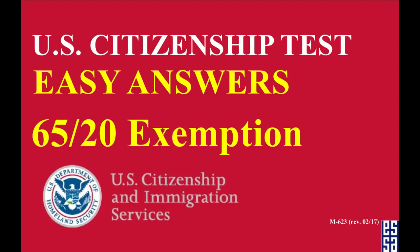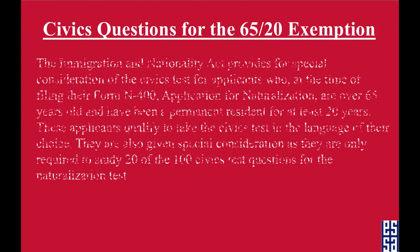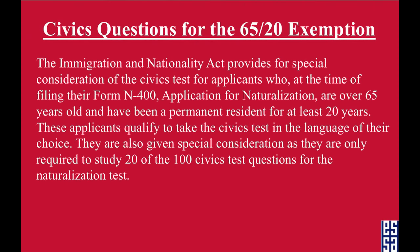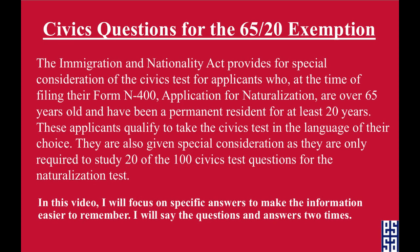Hello my friends! Today we have another video for the U.S. citizenship test using simple easy-to-remember answers, but this time it's all for the 65/20 exemption. The civics questions for the 65/20 exemption are for those applicants who are over 65 years old and have been a permanent resident for at least 20 years. These applicants can take the civics test in the language of their choice and are only required to study 20 of the 100 test questions. In this video I will focus on specific answers to make the information easier to remember. Let's get started.